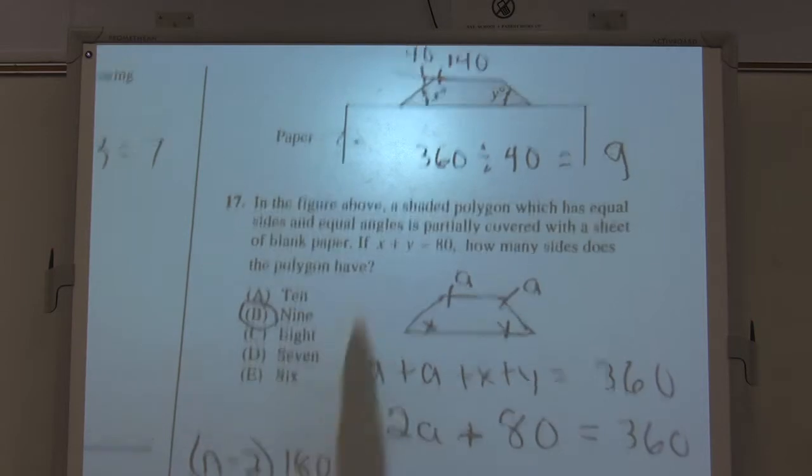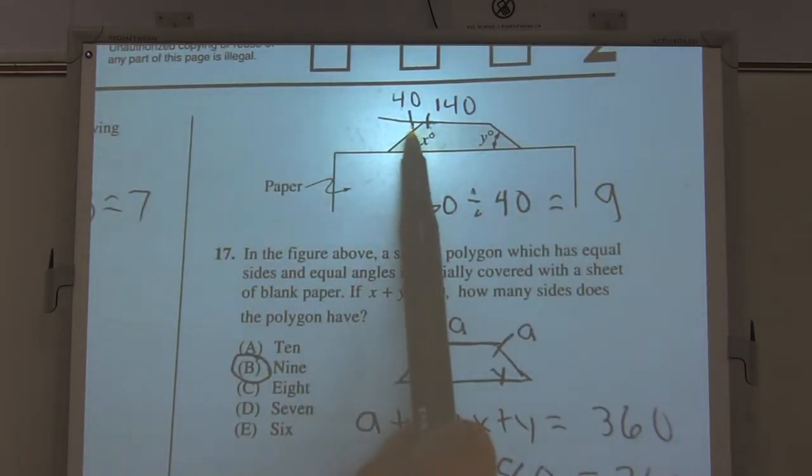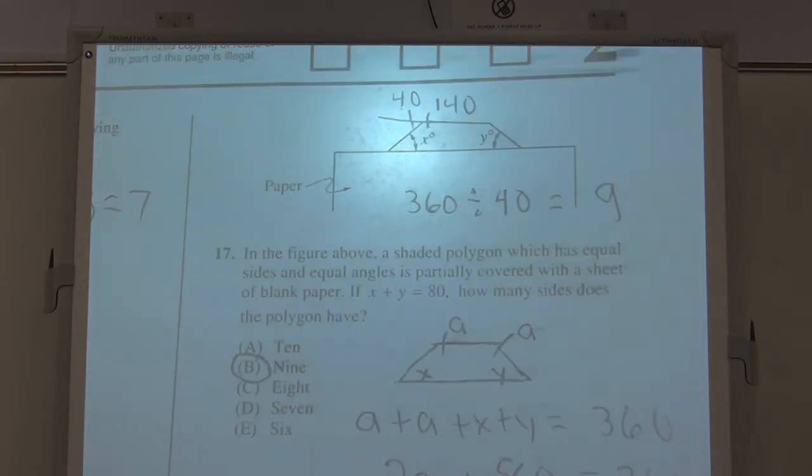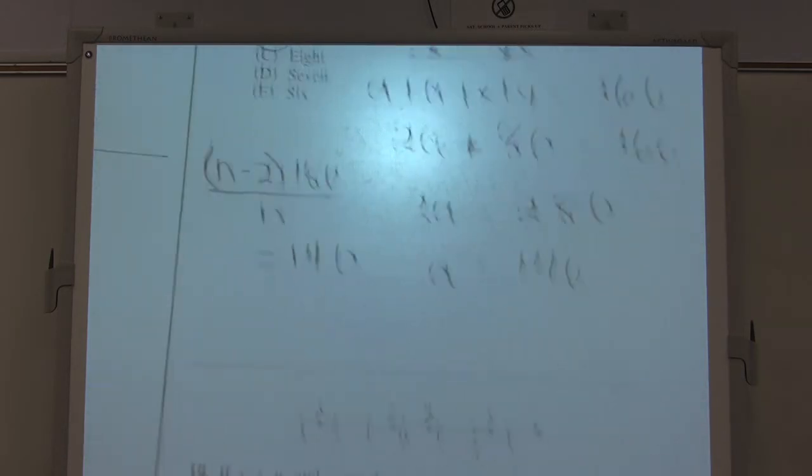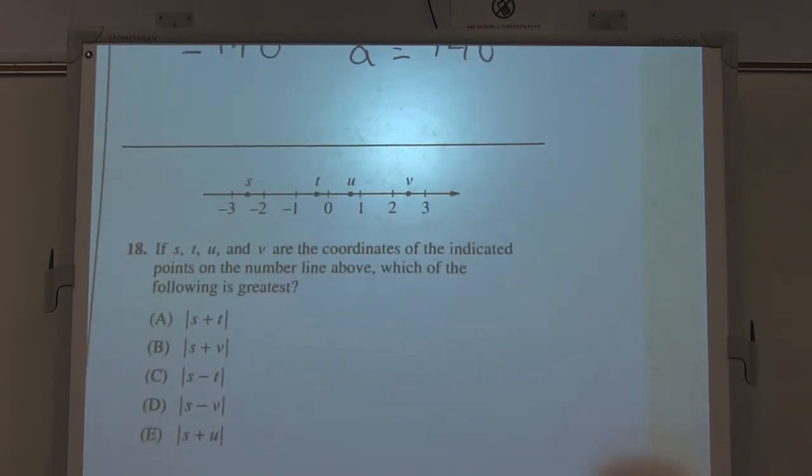So I think it's faster to do it this way, though, to get the exterior angle right here, and then divide that into 360. Okay, number 18. It's a hard one. Okay, number 18.